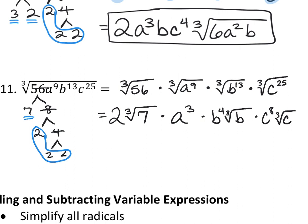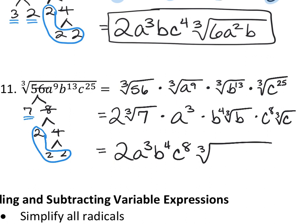The final answer for number eleven is: two a cubed b to the fourth c to the eighth, times the cube root of seven b c.